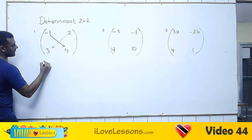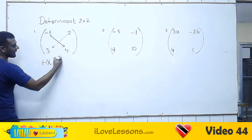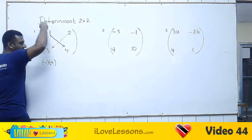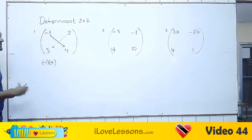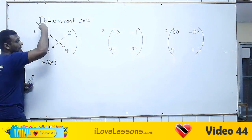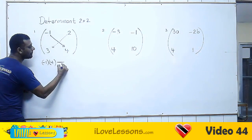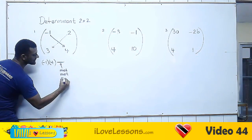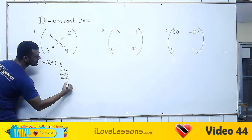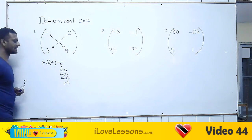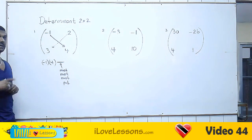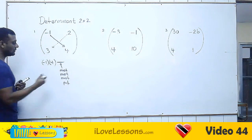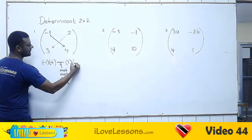We're going to take minus one and multiply it by four. So we multiply the first diagonal, and as soon as we multiply the first diagonal — the more important one — you must, must, must put a minus sign. No matter what. Then multiply the less important diagonal: two multiplied by three.